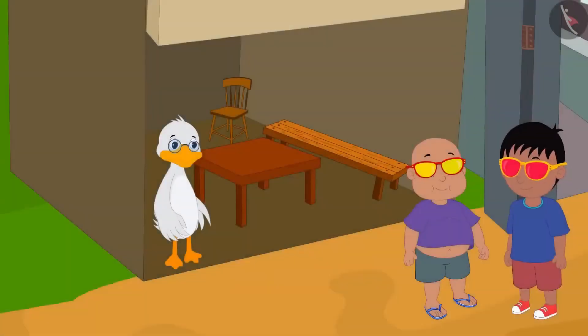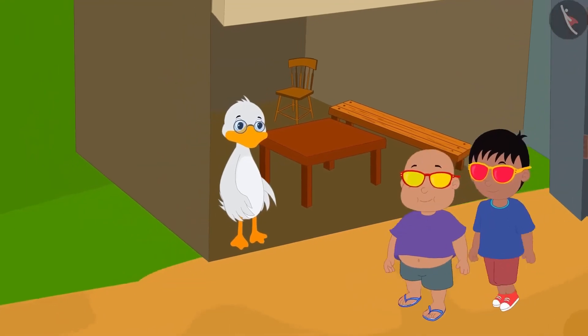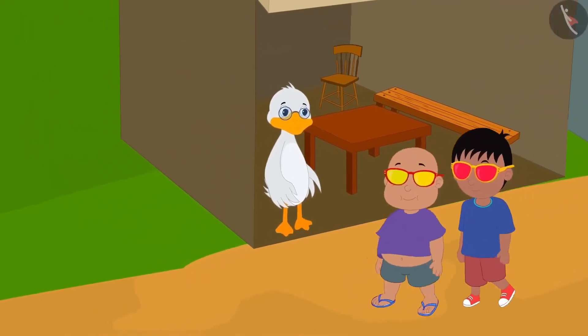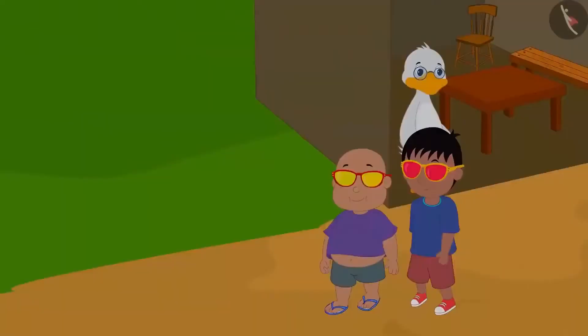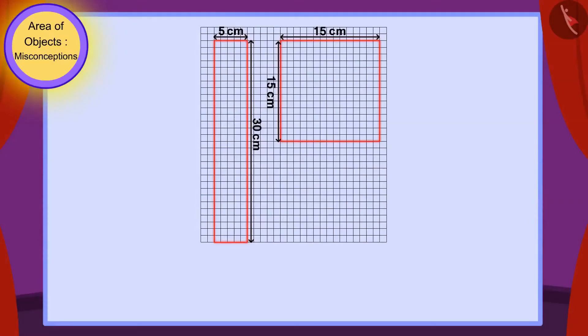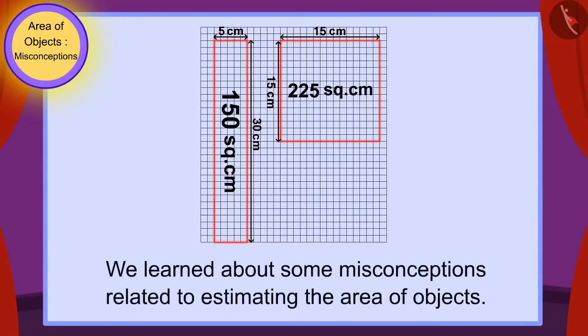Both friends put on their glasses and started walking once again. Children, in this video, we learned about some misconceptions related to estimating the area of objects.